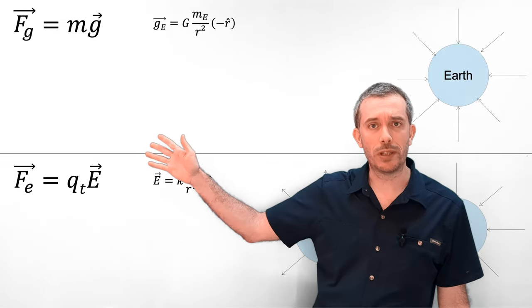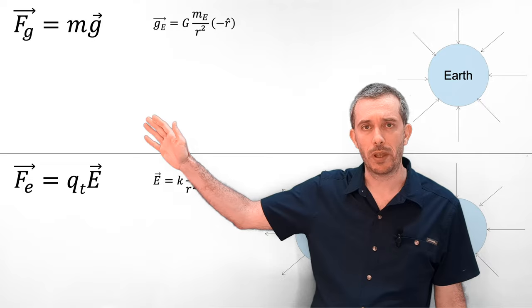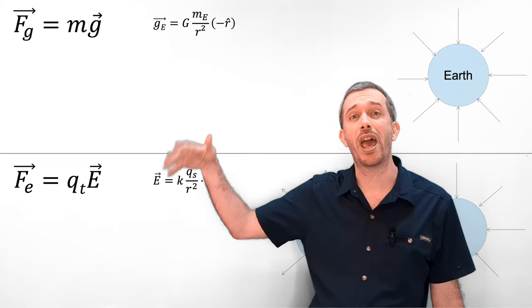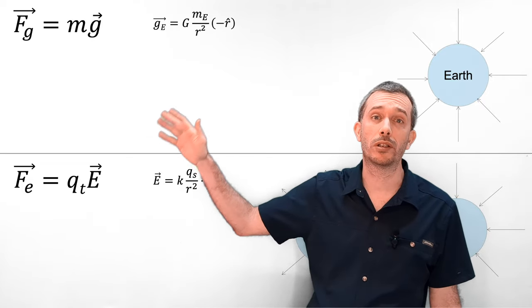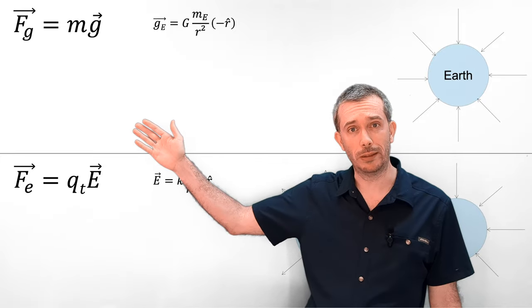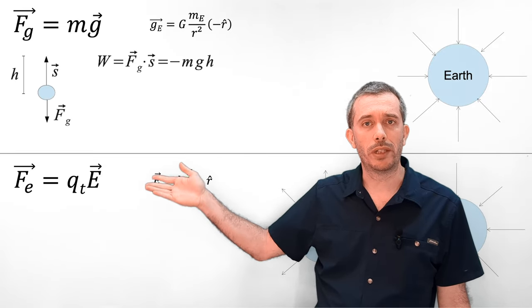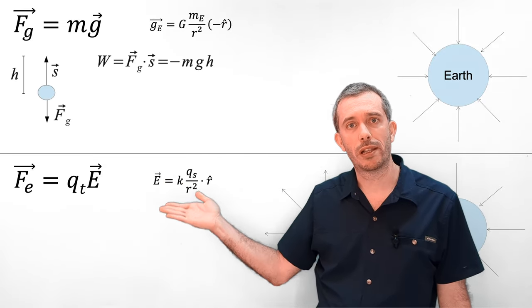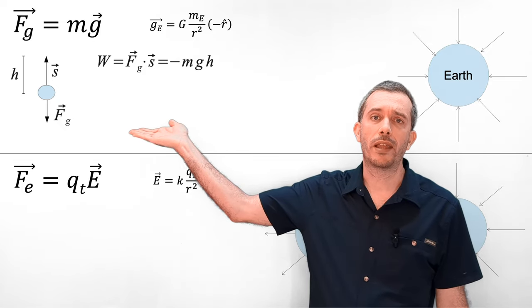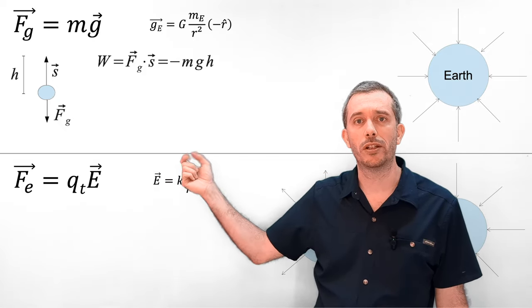We have been doing something else when we were talking about gravity. That is, when we consider the energy or the work done by gravity. When I calculate the work done by gravity when an object is lifted to a height h, I get that that work is negative mgh.